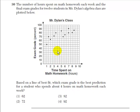So if we look at four hours of math homework and kind of trace it up here, here's about where 62 is. Here's 72, here's 82, here's 92.